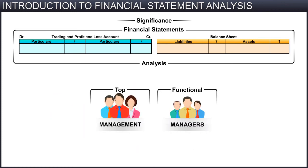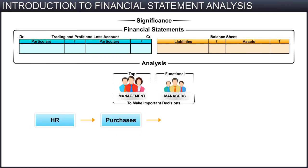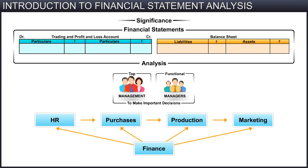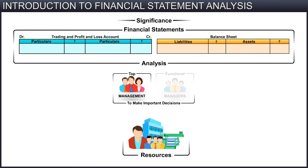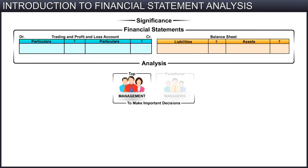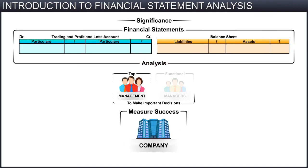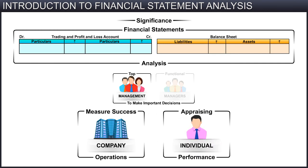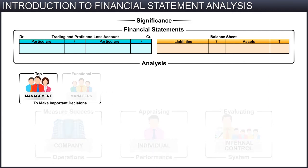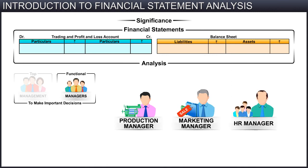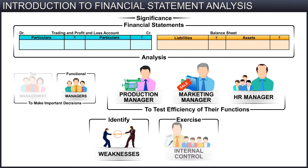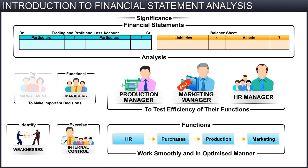Other than the finance manager, top management and other functional managers also require this analysis to make important decisions. The top management always wants to ensure that the resources of the organization are optimally utilized, so the analysis helps them measure the success of the company's operations, appraise individual performance, and evaluate the internal control system. Similarly, functional managers like the production manager, marketing manager, and HR manager also use financial analysis to test the efficiency of their functions, identify any weaknesses, and exercise controls so that their respective functions work smoothly and in an optimized manner.